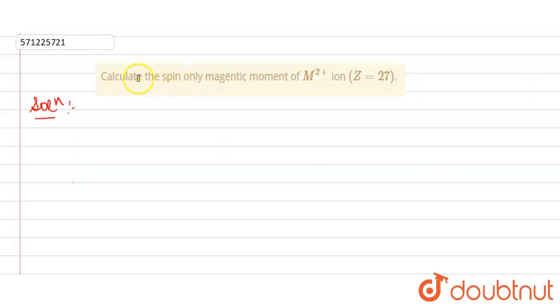Our question is to calculate the spin-only magnetic moment of M²⁺ ion, whose atomic size is 27 given.